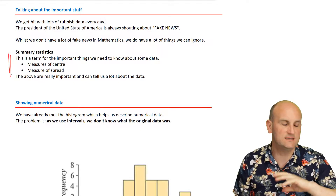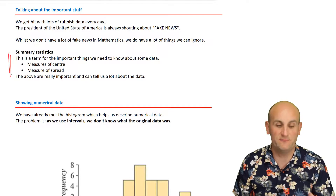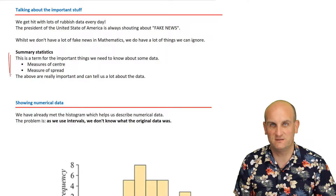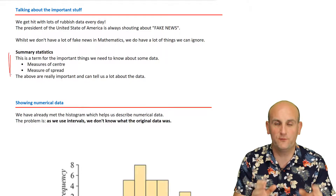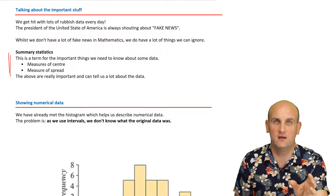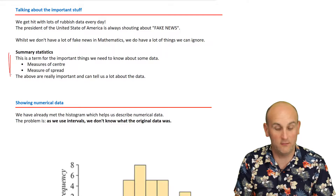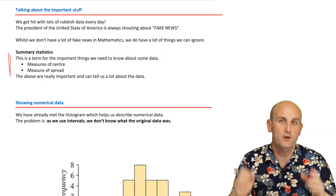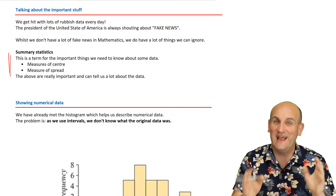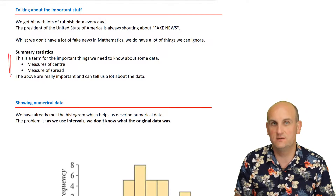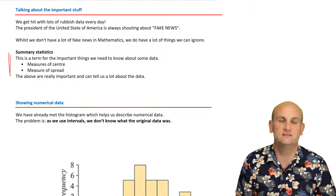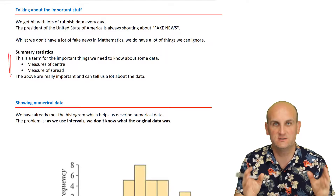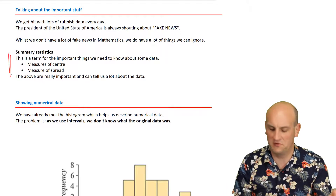Summary statistics you've probably met in year 9 or year 10. They're called measures of centre and measures of spread. There are different ways of talking about the centre of data — not just the median — and also measures of spread, not just range. Range is actually a little bit dodgy to use; it's great to teach year 7 and 8, but not necessarily great for more advanced students.